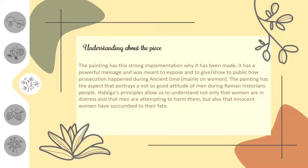The painting has a strong purpose behind why it was made. It carries a powerful message meant to expose and show the public how persecution happened during ancient times, mainly against women. The painting portrays the not-so-good attitude of men during the Roman era. Hidalgo's principles allow us to understand not only that women are in distress and that men are attempting to harm them, but also that innocent women have succumbed to their fate.